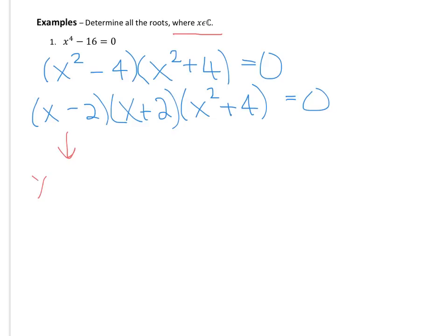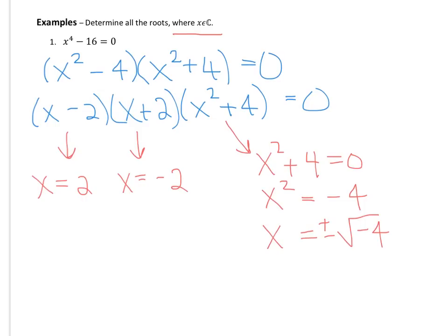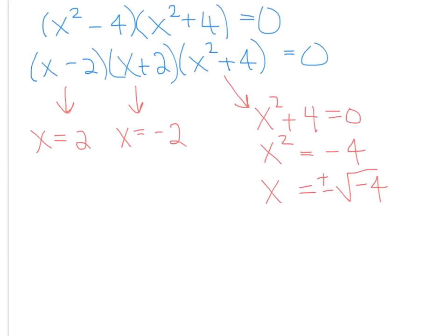So here, of course, we get x equals 2. That's a real solution. Here we get x equals negative 2. That's another real solution. And then over here, what we know we would do is we would move the 4 over to the other side and it becomes negative. Then, as we know, we are going to take the square root of the negative 4 and we're not going to forget the plus or minus.